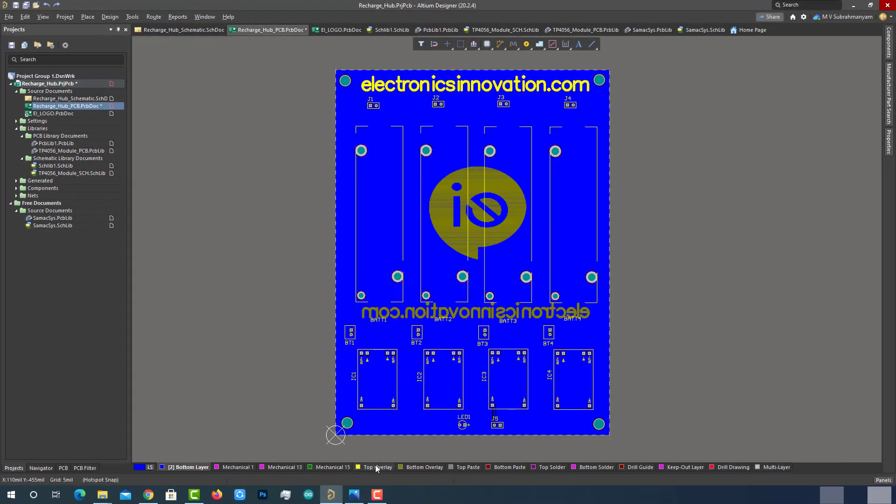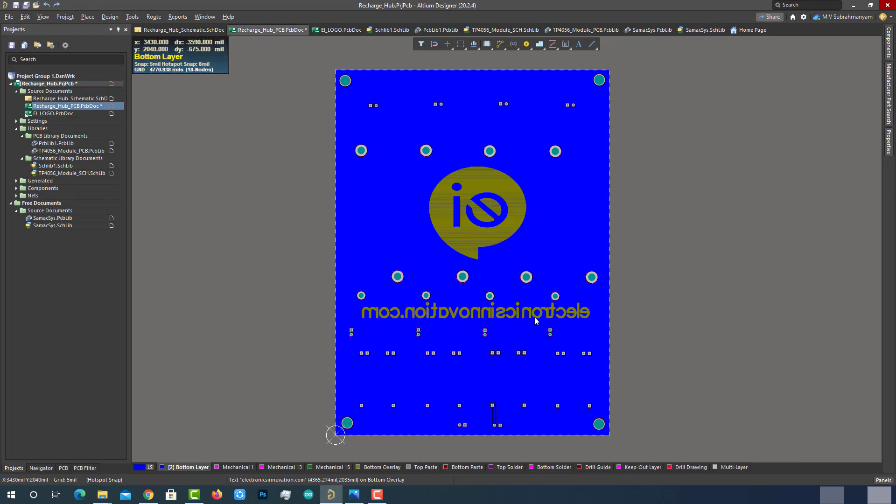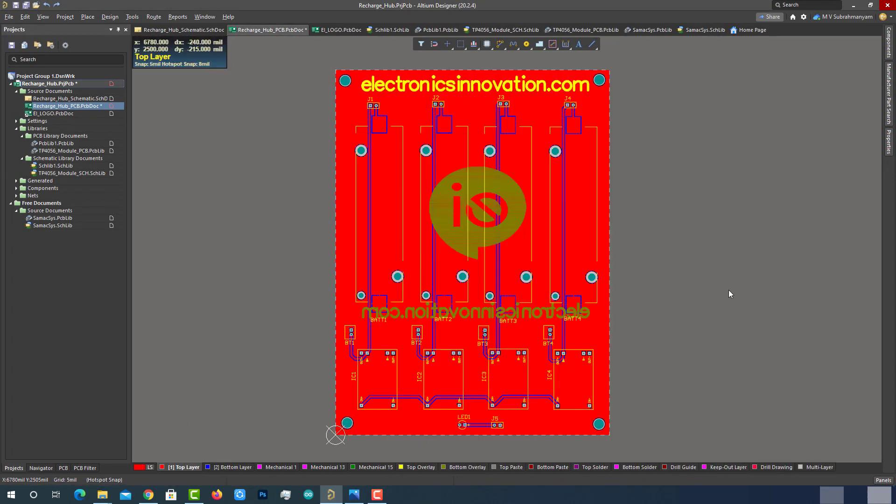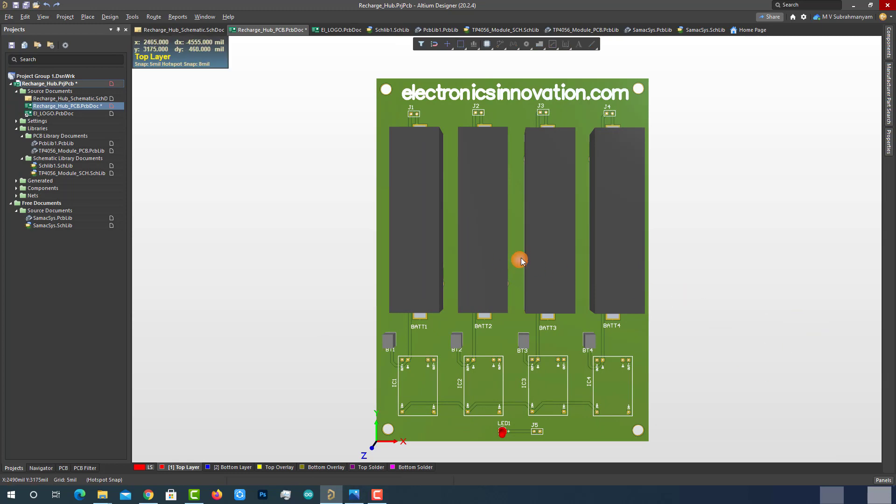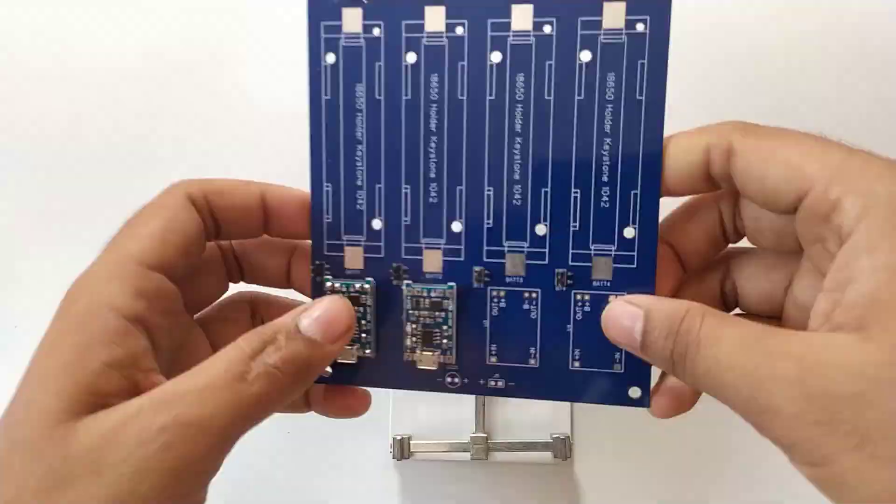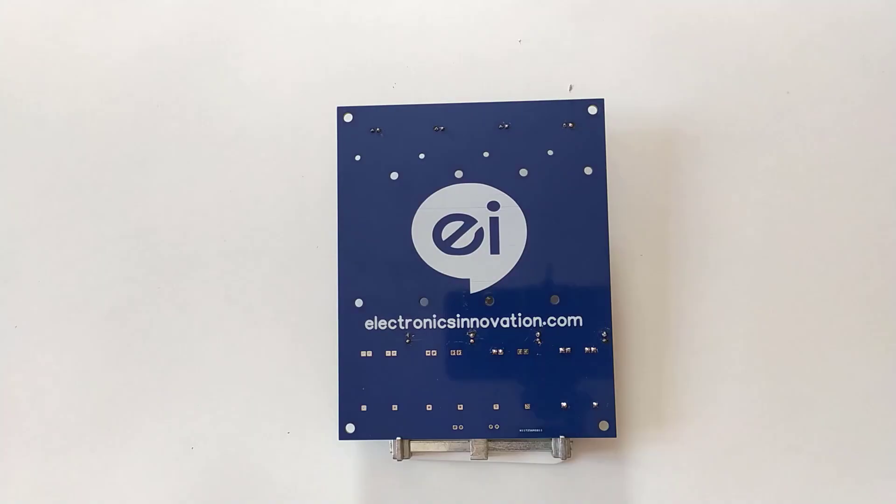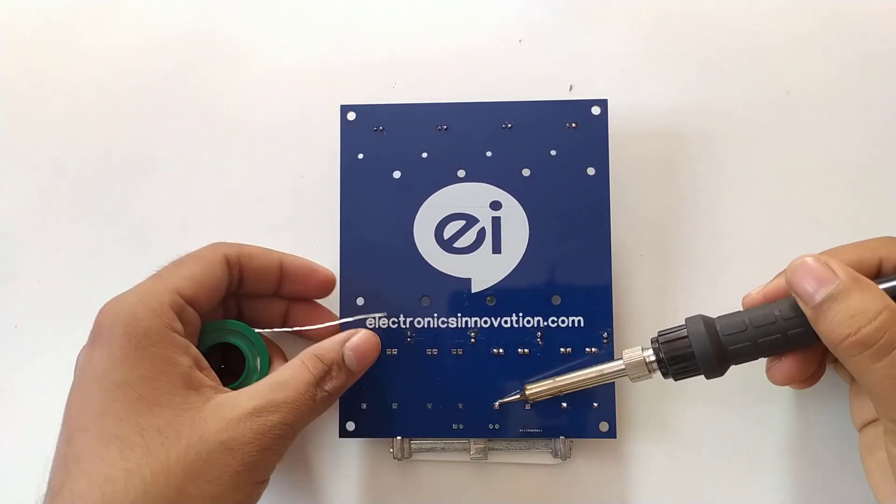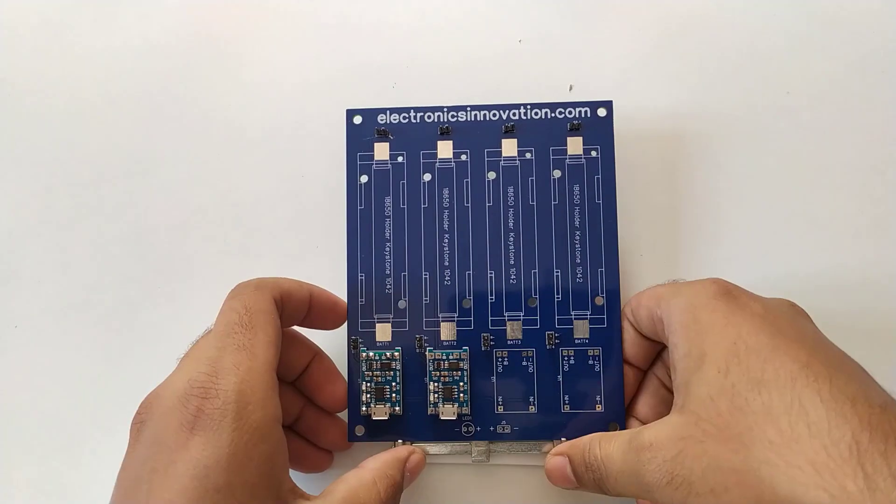So in the next video, we will walk through the PCB designing of Lithium-Ion charging hub with Altium and PCB manufacturing by PCBWay.com and PCB assembly exclusively in my lab. So that's it for this tutorial. See you soon in the next episode.